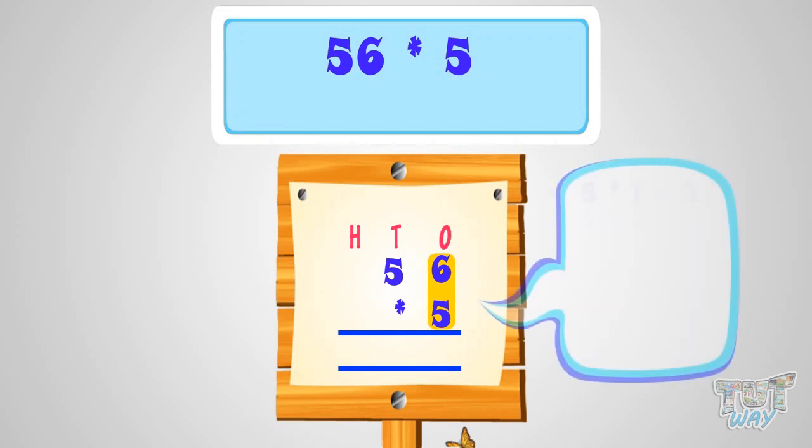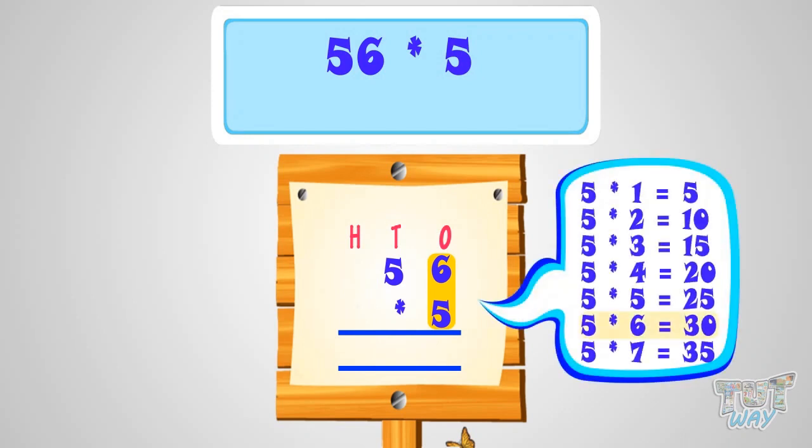We have to multiply 56 with 5. First of all, write it like this. Now, what is 6 multiplied by 5? Or, 5 multiplied by 6. It is 30. So, like we do in addition and subtraction sums, write the ones place digit at ones place in the product. And carry over the tens place digit to next place, that is the tens place.